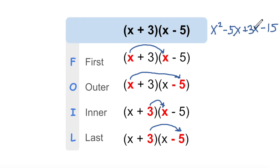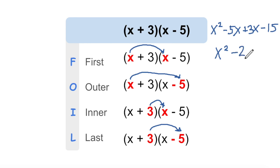You'll see that we always have two x terms to combine. When we combine like terms, we get x squared; we have minus 5x and plus 3x — negative 5x plus 3x gives us negative 2x, minus 15. So that's what we get as a result of applying FOIL to these two binomials — the product of two binomials. We multiplied out the first, outer, inner, and last — and that's why it's called FOIL.